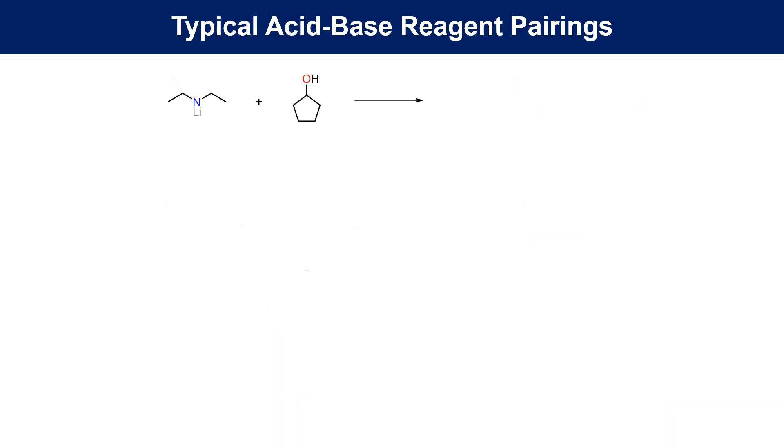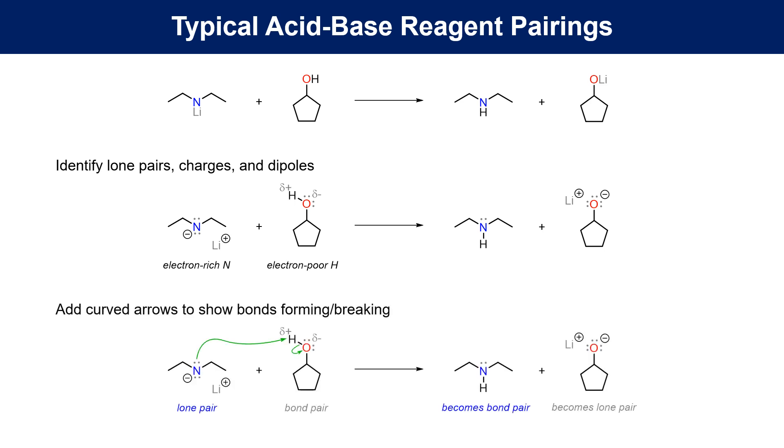In the next example we have the lithium salt of an amine reacting with an alcohol. This results in a proton transfer to give the amine and the alkoxide salt. For the starting materials, the anionic nitrogen is identified as the electron-rich center and the proton on O is the electron-poor area. The bond making curved arrow then begins at the electron-rich end and is pushed to the electron-poor H. The second bond breaking arrow describes the electronegative O taking a pair of electrons to avoid breaking the octet rule and completing the process.